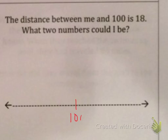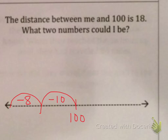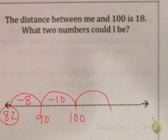So we know our number is 100. We're going to go back 18 — minus 10, minus 8. So 100 minus 10 is 90, and 90 minus 8 is 82. So one number could have been 82. Or I can go up 18.